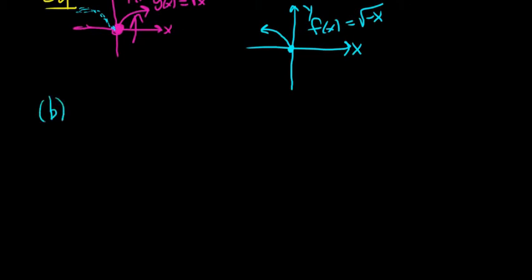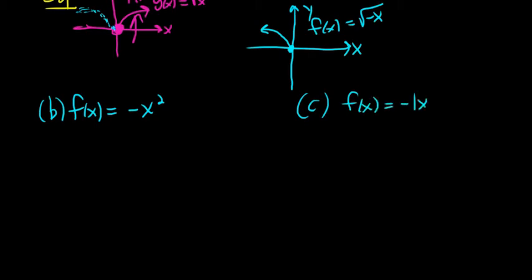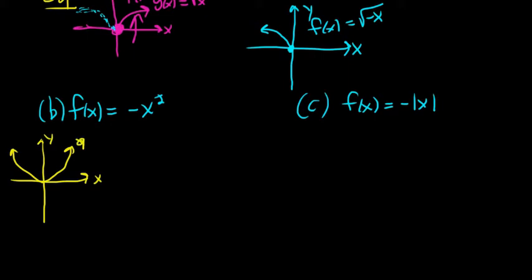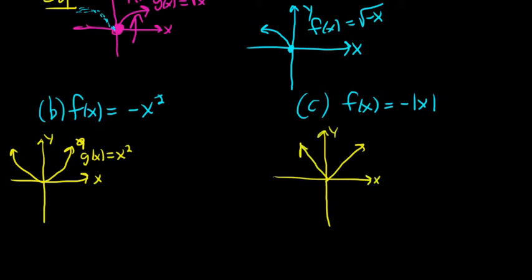Let's do two more. Part b: f of x equals negative x-squared. And part c: f of x equals negative absolute value of x. In part b, the base function is x-squared — the standard quadratic, also called a parabola — which looks like a U shape. In part c, the base function is the absolute value function, which looks like a V. Just think V for value — an easy trick to memorize it.